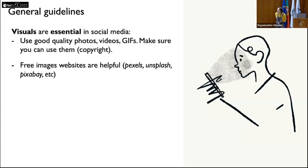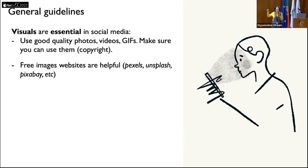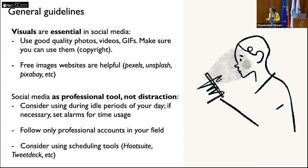Visuals are essential in social media — use good quality photos, videos, or GIFs, but make sure you can use them and pay attention to copyright. Twitter doesn't rely as heavily on images as Instagram or TikTok, but images still matter: if you tweet the same text with versus without an image, the tweet with the image will have more engagement. There are websites where you can find good images for free, such as Pexels, Unsplash, and Pixabay — most of the images in my presentation came from these. This is a professional tool, so use it during idle periods of your day.